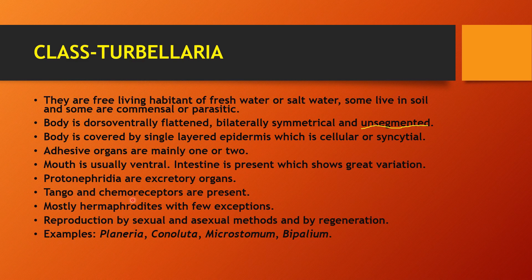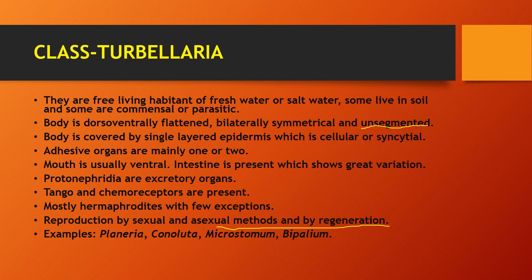Protonephridia is the excretory organ. Tango and chemoreceptors are present — tango receptors sense touch and pressure. These organisms are mostly hermaphrodites. Reproduction is sexual, and the asexual method is regeneration.